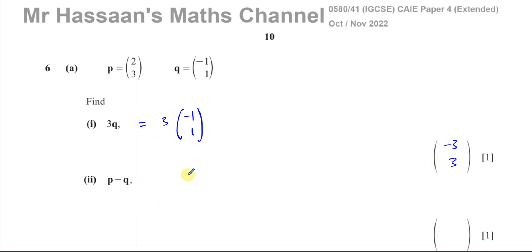Then the next one says p minus q. So we take vector p, 2, 3, and we subtract from it vector q, which is minus 1, 1. Just be careful about the signs here. 2 minus minus 1 is like 2 plus 1. And you have 3 minus 1. So you end up with 3 and 2 as your vector for p minus q. That's pretty simple.